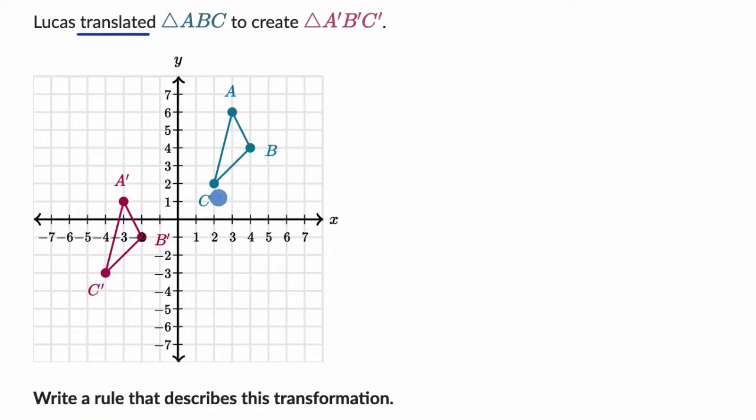To think about what that translation is, we just have to say for each of these points, what happened to them? How did they get moved? Well, for example, point C right over here - to go from C to C prime, we had to go, how many units down is that? One, two, three, four, five. So we had to go five units down. And then we had to go one, two, three, four, five, six units to the left.